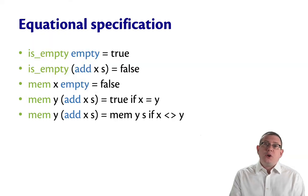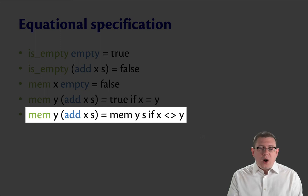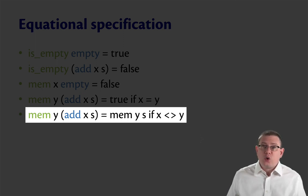On the other hand, if they're not the same value, then we don't really know whether y is a member of s yet. We're going to have to simplify that by just saying, well, check now whether y is actually in s or not. We can't say true or false here. We have to kind of recurse in a way.